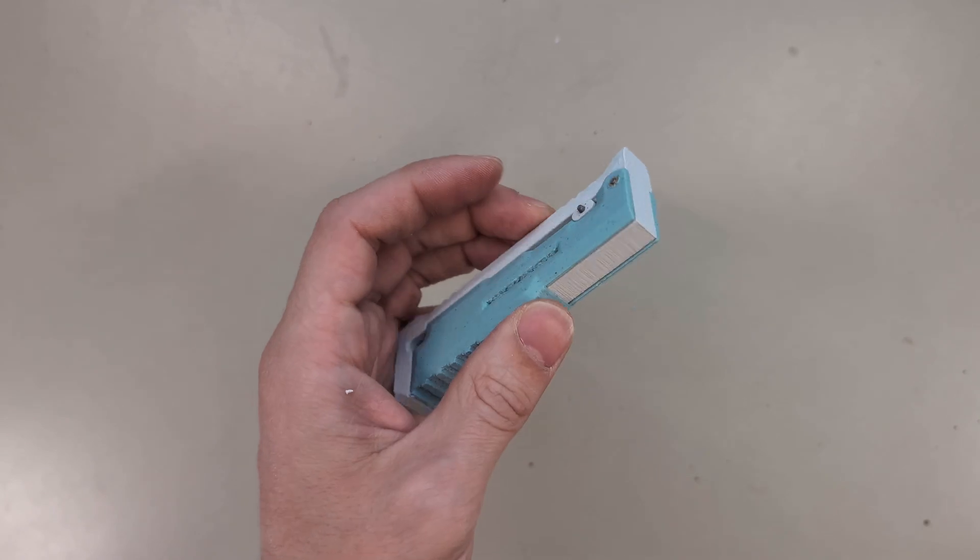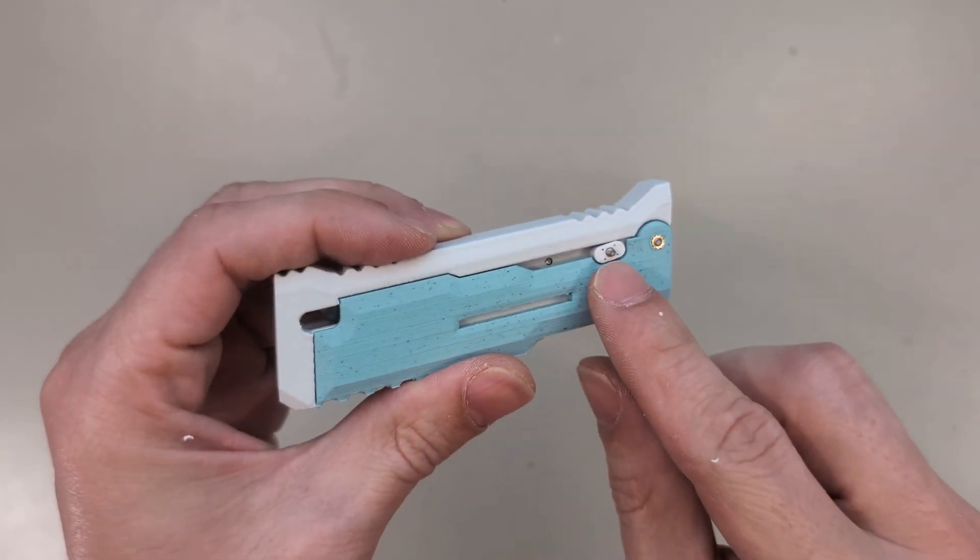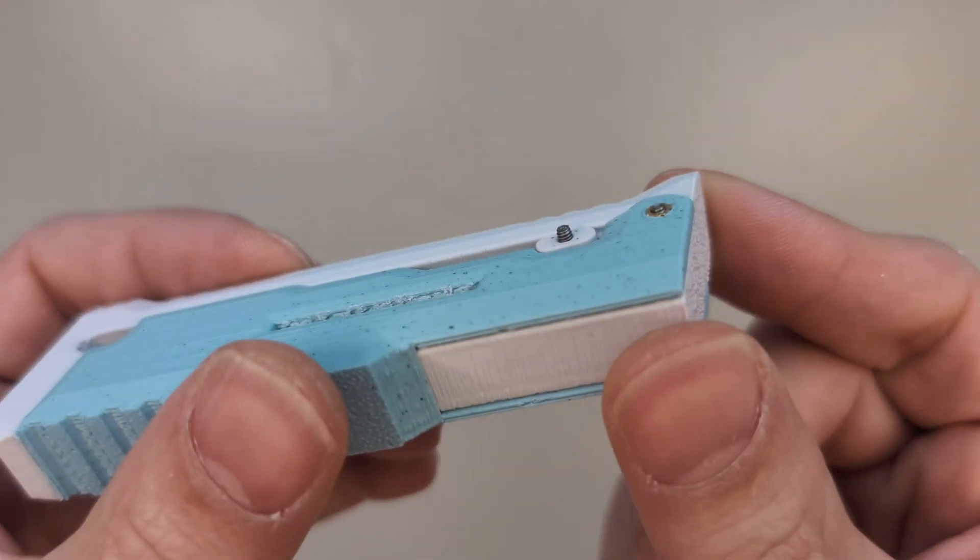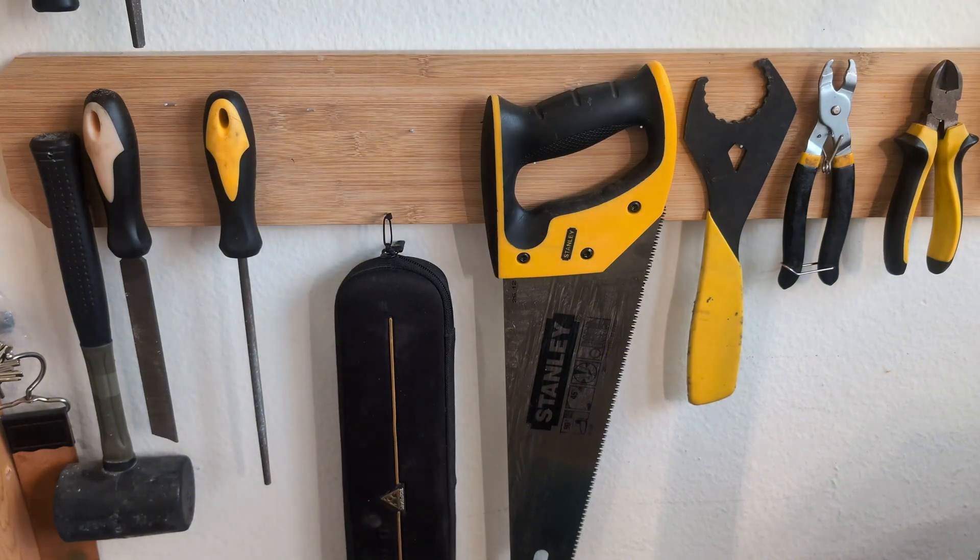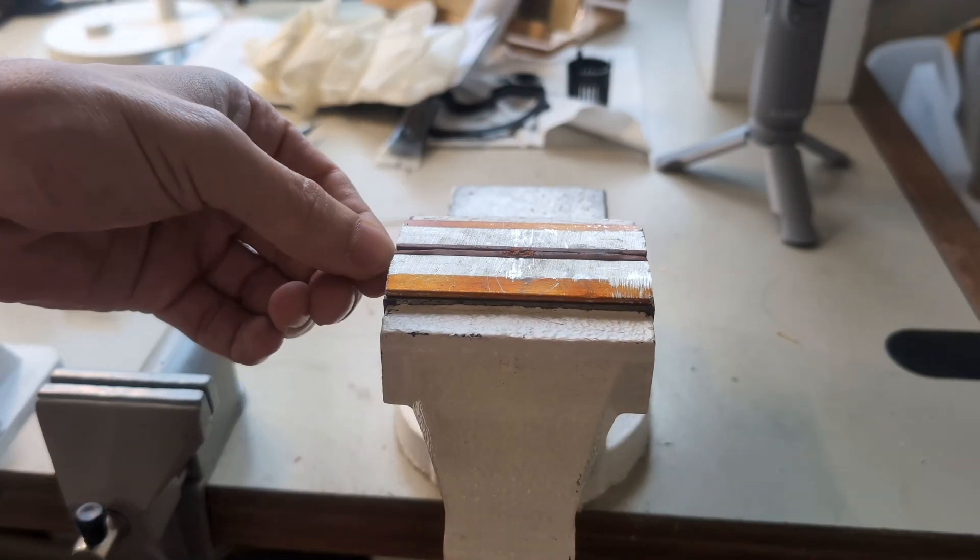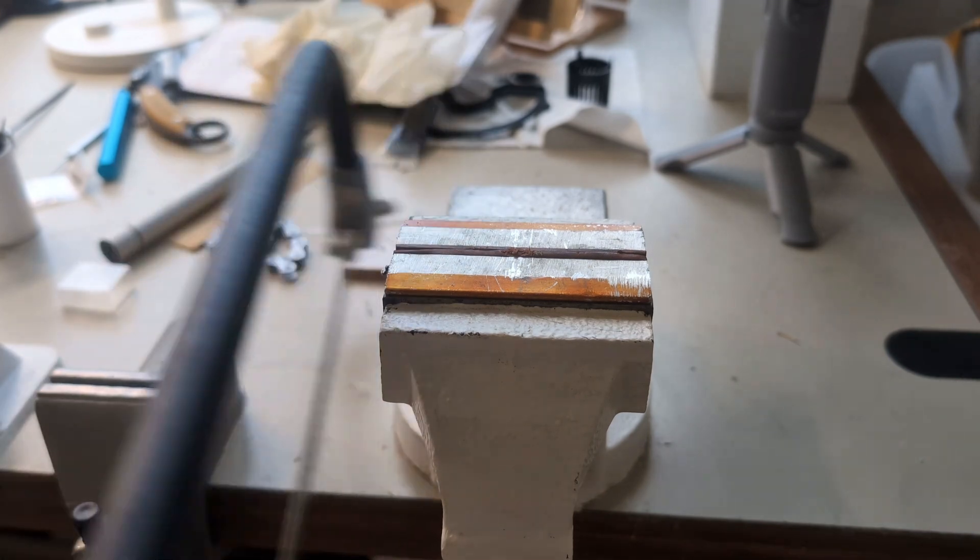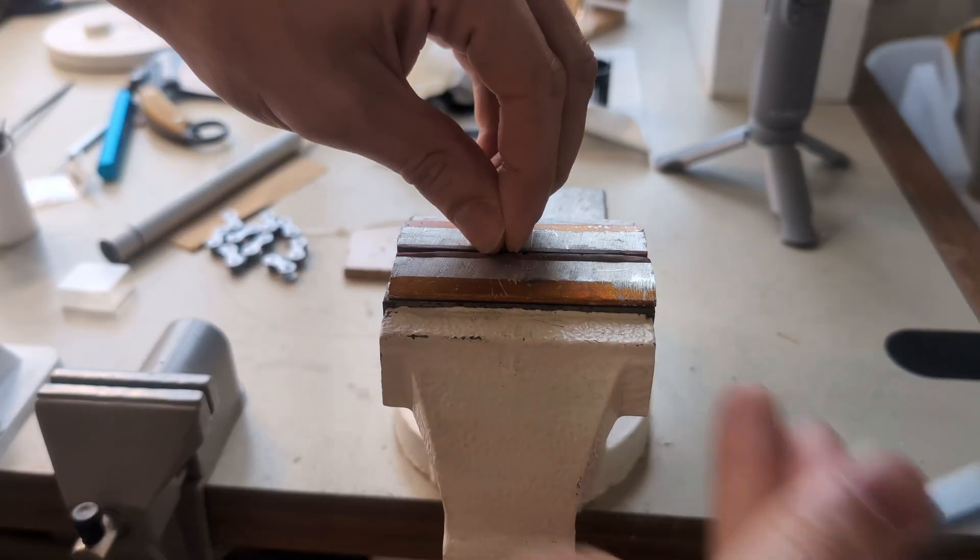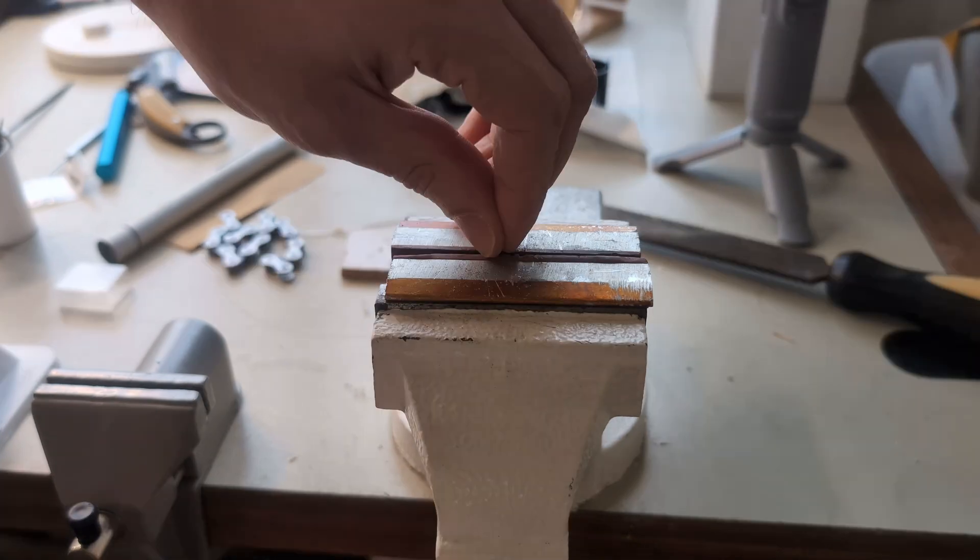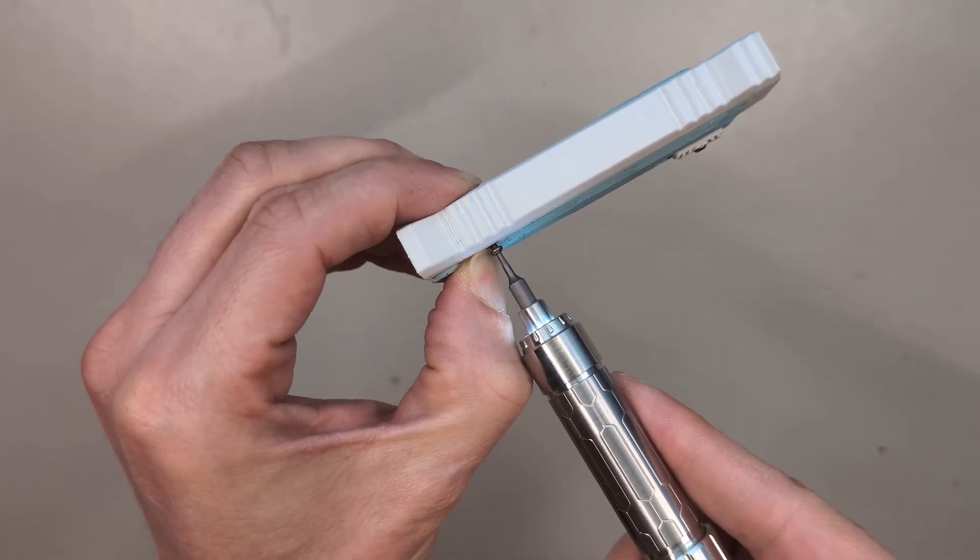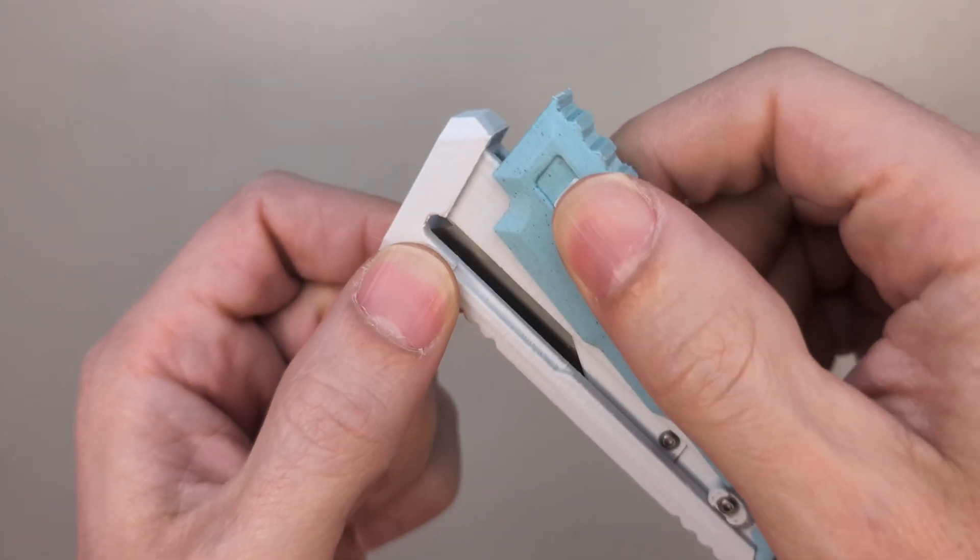As you can see, the 14mm screw is a bit too long. So I have to cut this to the right size. A 12mm long M2 screw would probably be the right size for this, but I don't have these. So I cut it, and file it, and all the way through, so that this knife is finished.